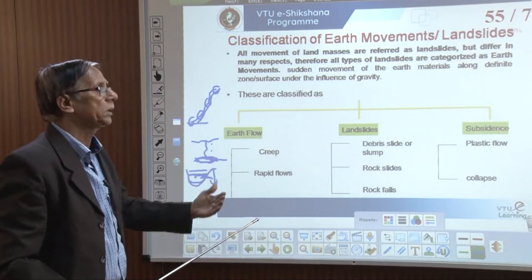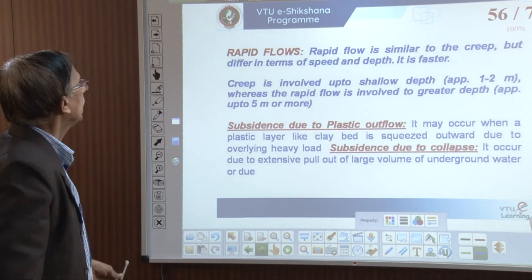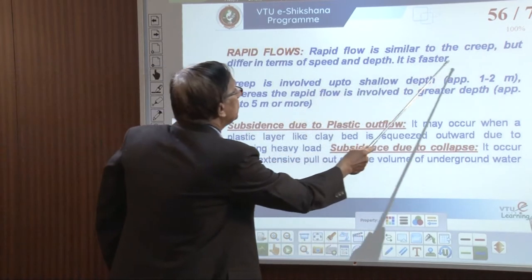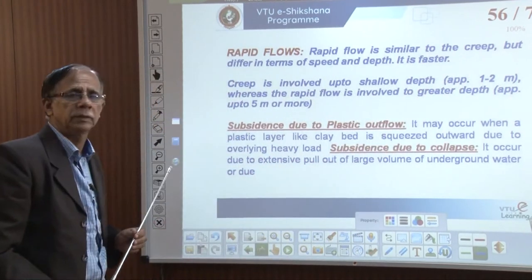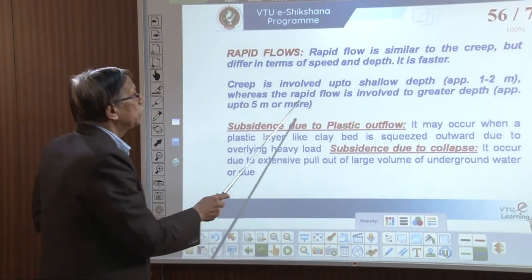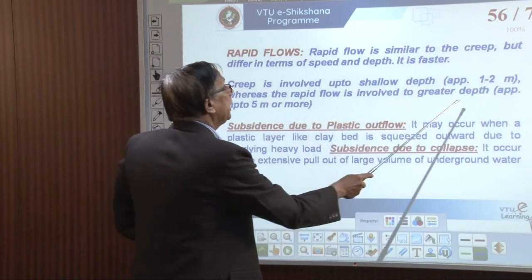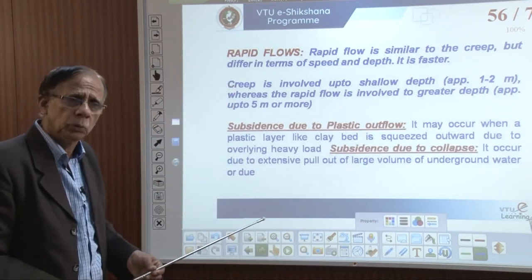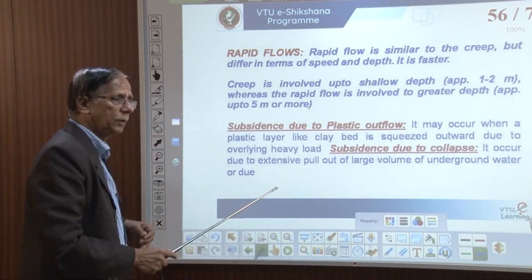Several man-made activities add to landslides. Rapid flow is similar to creep but differs in speed and depth — creep involves shallow depth of only 1 to 2 meters, whereas rapid flow involves greater depth, even 5 to 10 meters or more, especially along the Western Ghats hill ranges.